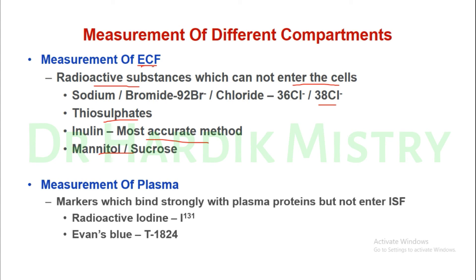Measurement of plasma uses markers that bind strongly with plasma proteins and do not cross blood capillaries into the interstitial fluid. These include radioactive iodine (I-131) and Evans blue dye (T-1824). From total body water, ECF, and plasma measurements, ICF and interstitial fluid volumes can be calculated mathematically.